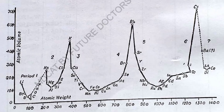Now we can see here: this is the Y-axis representing atomic volume, and this is the X-axis representing atomic weight. The atomic weight scale starts at zero and goes 10, 20, 30, 40, 50, 60, and so on in increasing order.